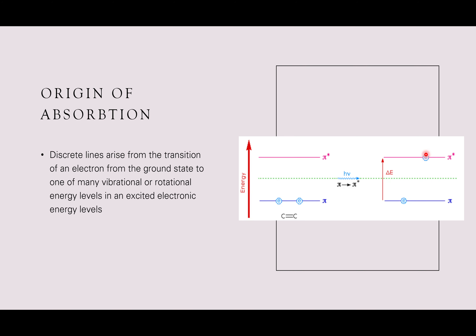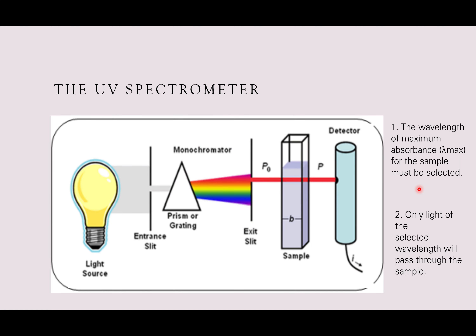Let's start UV-Vis spectroscopy. The origin of absorption: these discrete lines arise from the transition of an electron from the ground state to one of many vibrational and rotational energy levels in an excited energy level. When energy is absorbed by electrons, they end up going into a more excited, more unstable orbital — what we call the antibonding orbital or the star orbital. We're looking at electrons existing within a double bond between two carbons on a pi molecular orbital.